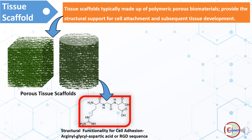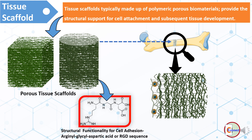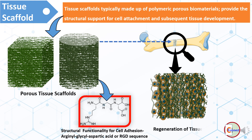These tissue scaffolds are placed at the site of injury. Porosity allows cell migration through the scaffolds and helps in tissue regeneration. Microstructures around the pores provide structural support for tissue growth. After regenerating the tissues, these scaffolds degrade and are excreted out.